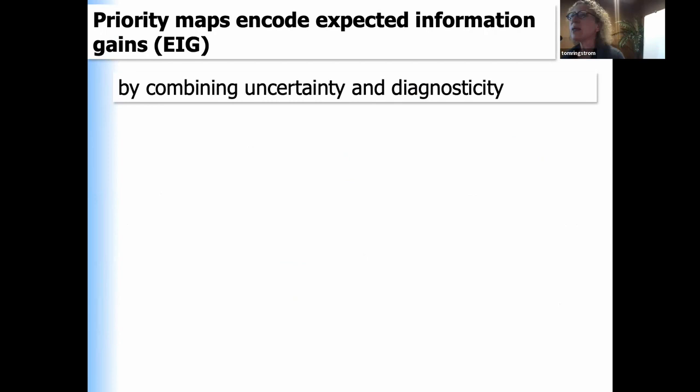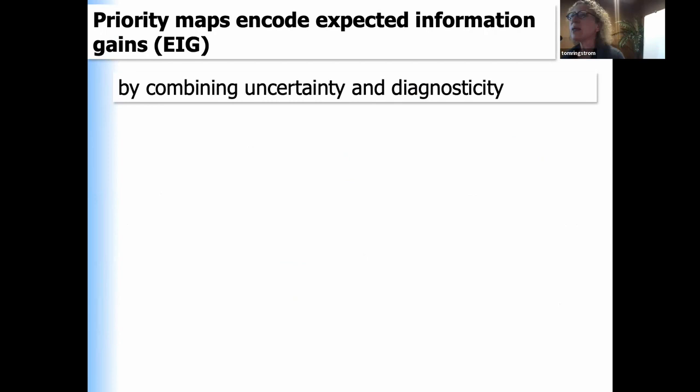We have proof of principle that these priority maps, which have been a mystery, encode something like expected information gain. That gives us real leverage because we know a lot of the neural substrates that generate and control eye movements, so we can understand how these circuits are engaged to reduce uncertainty, make predictions, and learn.